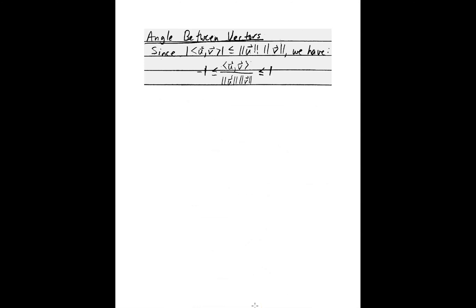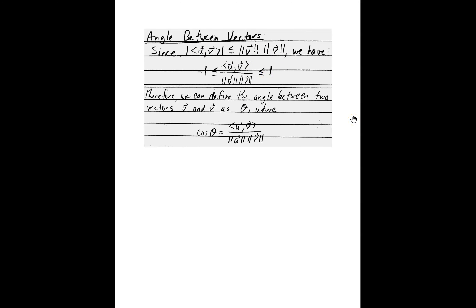That's the triangle inequality, and notice it involved the Cauchy-Schwarz inequality. Now, how does this apply to angle between vectors? Since the absolute value of the inner product is less than or equal to the product of the norms, dividing through gives a quotient that must be between negative one and one. So for any inner product space, we define the angle theta between two vectors such that the cosine of theta equals the inner product of u and v divided by the product of their magnitudes — and we need this between negative one and one to be able to take the inverse cosine.